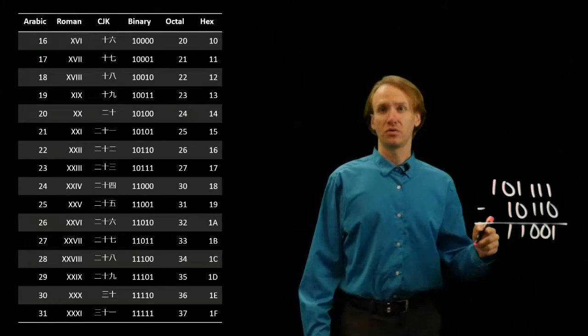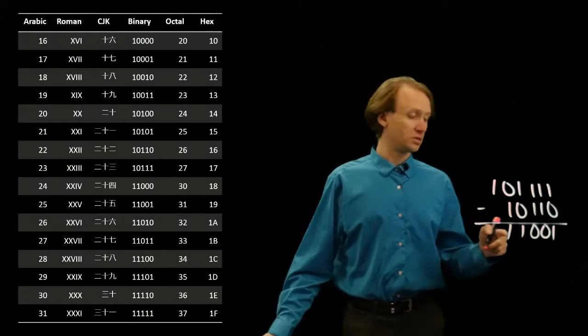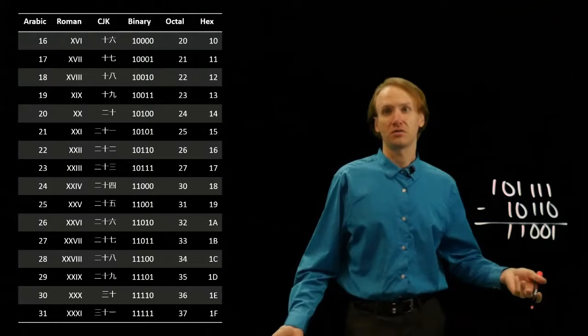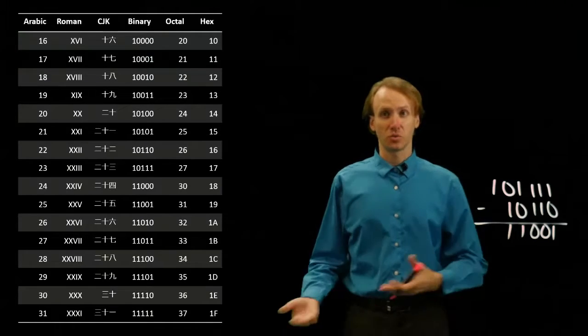So if I look next to 25, I do get 11001 for my binary representation. So this worked out again.